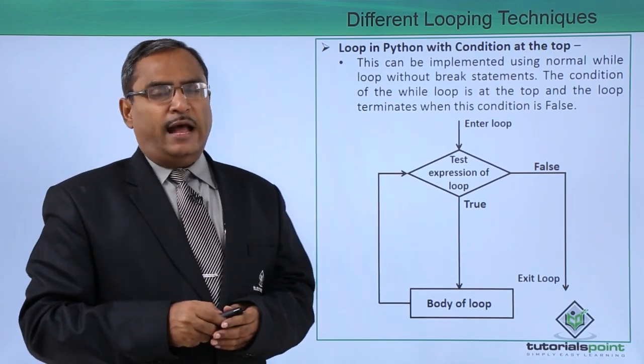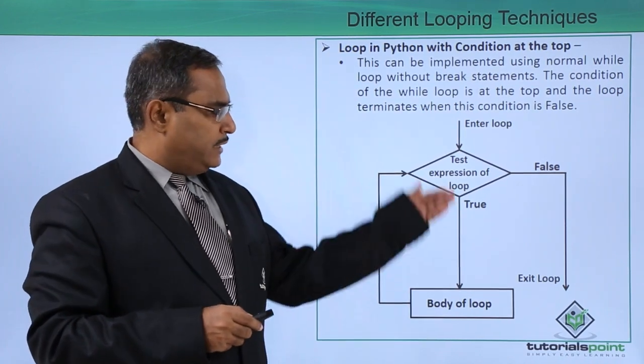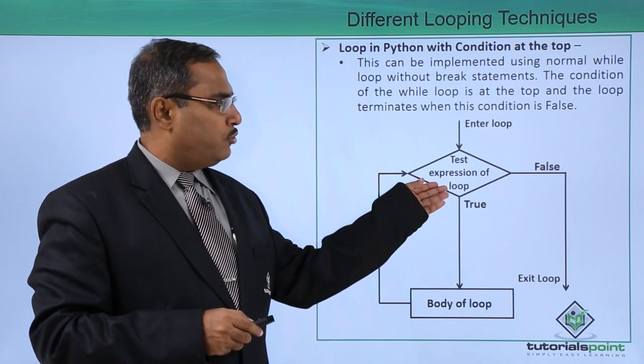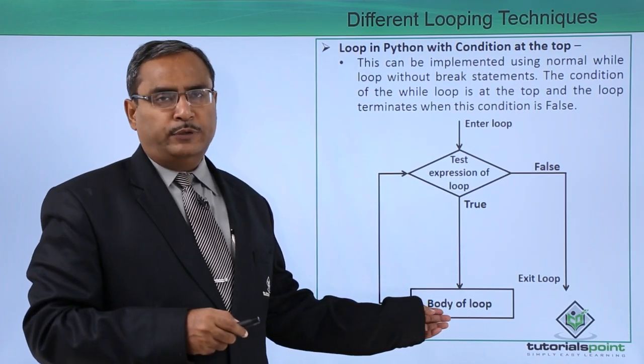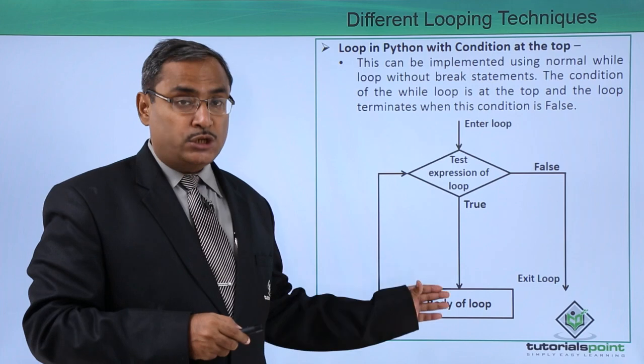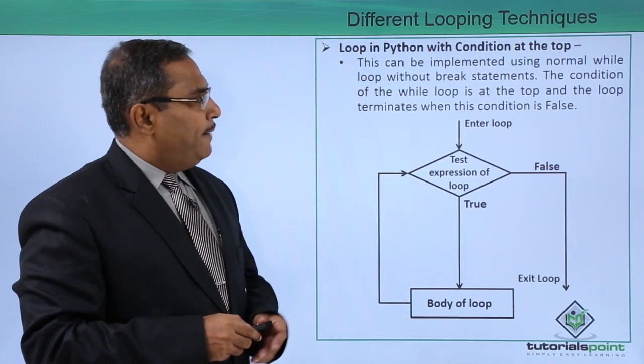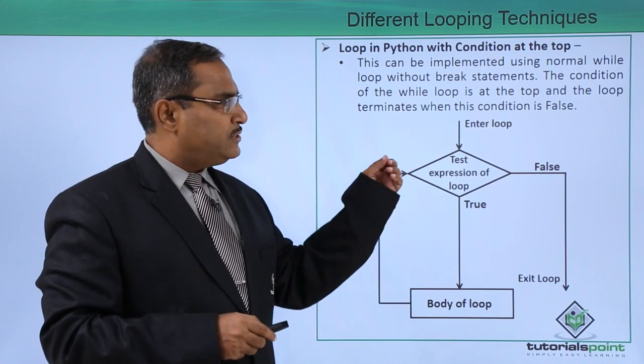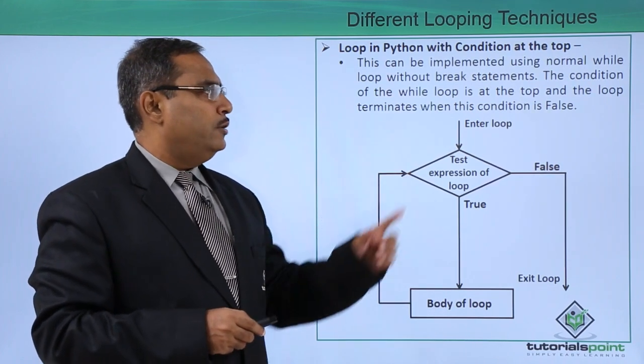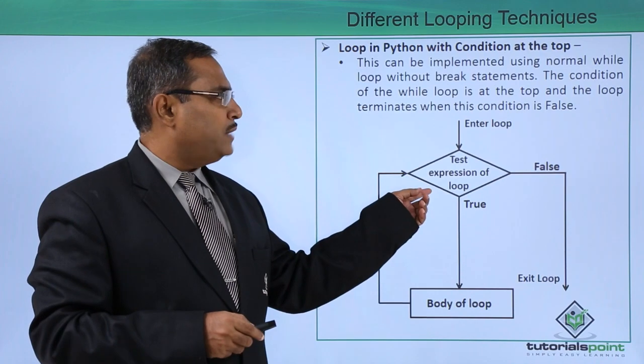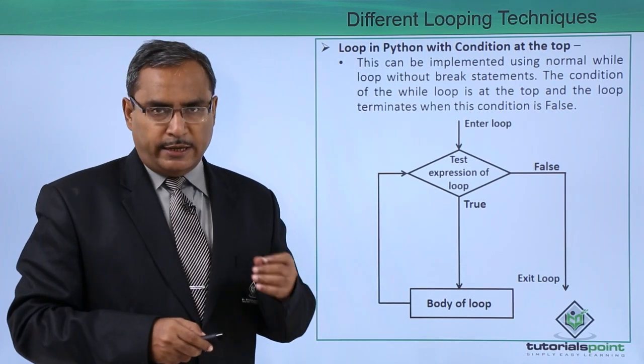Loops in Python with condition at the top. Here you see in this particular flowchart the condition is at the top and then we are having the body of the loop here after this condition which will be at the top of the loop. This can be implemented using normal while loop without break statements. The condition of the while loop will be at the top and the loop terminates when the condition is getting false.